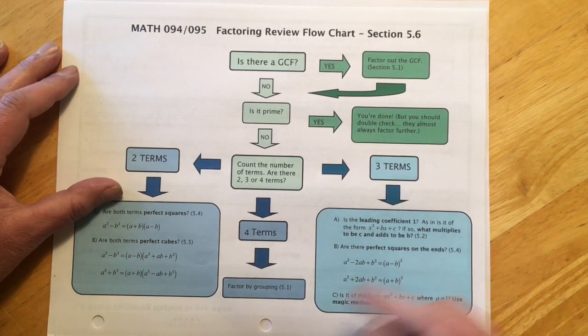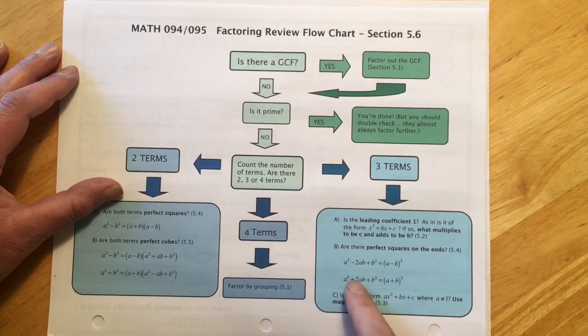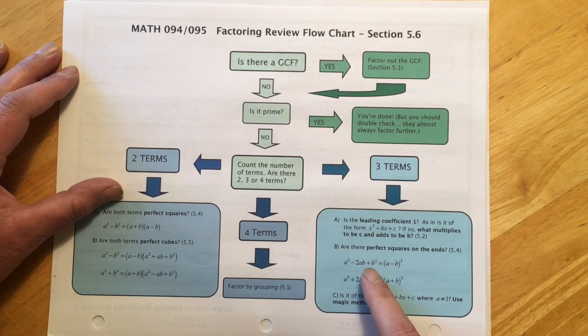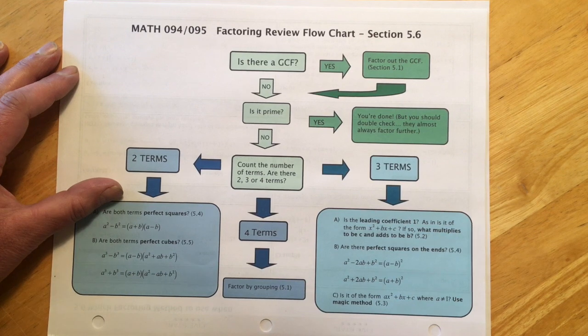The next thing it could be is it could have squares on both ends, in which case it's one of these factoring formulas here that we saw in 5.4. We like those. That's where we just do the parentheses with the square and basically write down the answer.